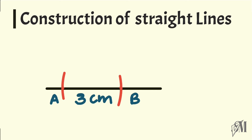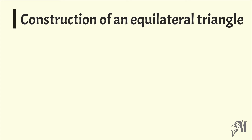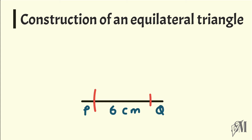I name these two points as A and B, so AB is my straight line which is equal to three centimeters. Now let's go to the next section — here we are going to see how to construct an equilateral triangle. An equilateral triangle is a triangle with all sides equal. I'm going to construct a triangle with length six centimeters. I have already drawn a line PQ and this length is equal to six centimeters.